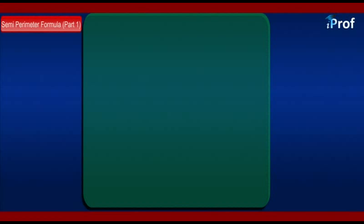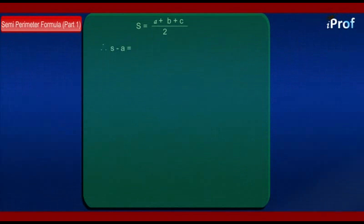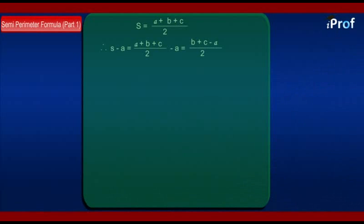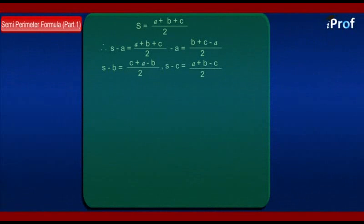After introduction of sine rule and cosine rule, we shift over to another important application of trigonometric functions. We take up: let S be equal to the semi-perimeter of the triangle, that is half of the perimeter, that is (A plus B plus C) divided by 2. Therefore, S minus A equals (B plus C minus A) divided by 2. Similarly, S minus B equals (C plus A minus B) divided by 2, and S minus C equals (A plus B minus C) divided by 2.